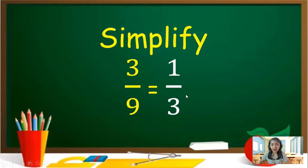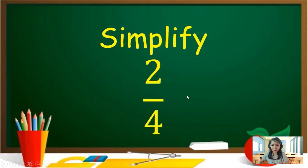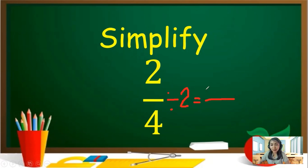Again, they are just the same in value, but the left side has the bigger number and the right side has the lower number. But both of them have equal value. Next, let us simplify 2 over 4. Think of the GCF of 2 and 4. The answer is 2. Let us divide numerator and denominator by 2. 2 divided by 2, the answer is 1. 4 divided by 2, the answer is 2. So your simplified form of 2 over 4 is 1 half.